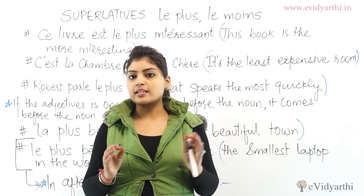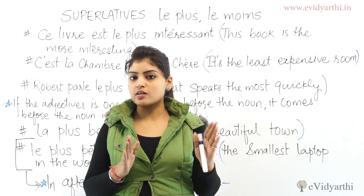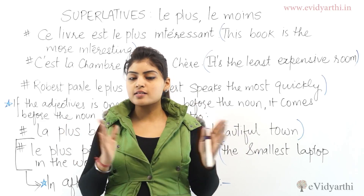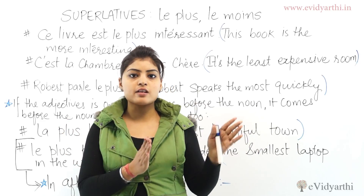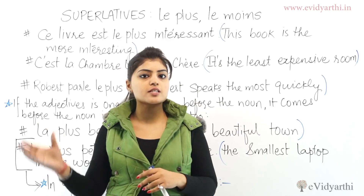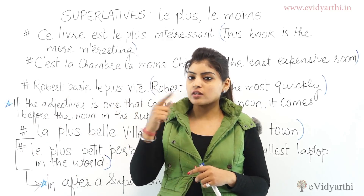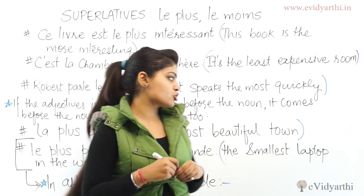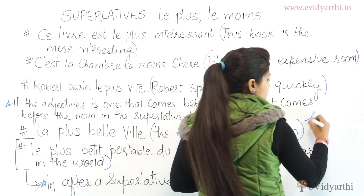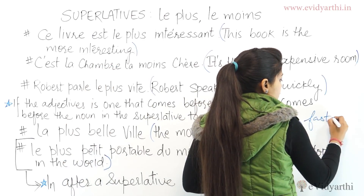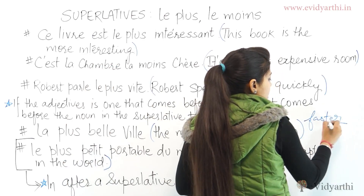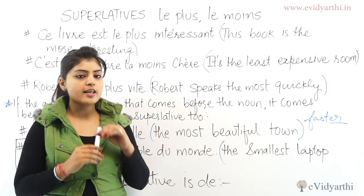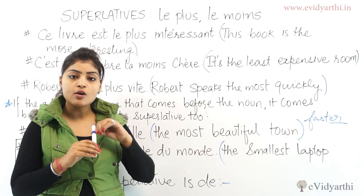We have seen that English words like 'faster', 'easier', and 'simpler' don't exist in French. In French we use 'plus' and 'moins' for the -er ending comparative forms in English, such as faster, cheaper, and shorter.